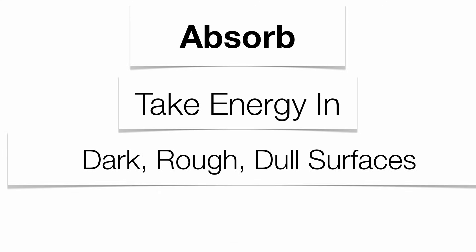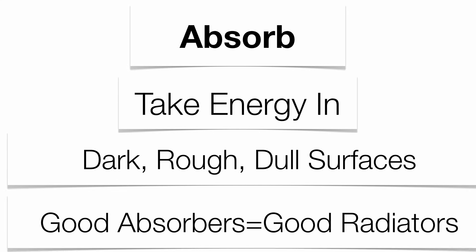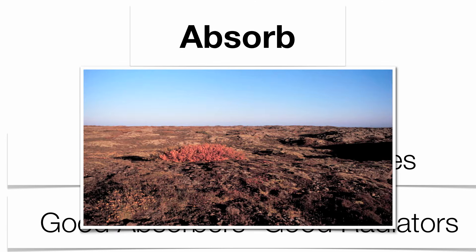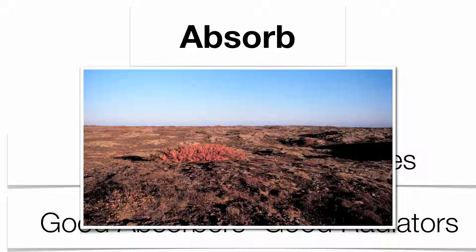We can then have absorbing. We know that energy is going to be taken in by really dark, rough, dull surfaces. When you talk about dark surfaces, not only are dark surfaces good absorbers, they're also good radiators of energy. They give energy off as well. So continents, for instance, are a great example of good absorbers. They're going to take the energy in, but they're also going to give it off as well.